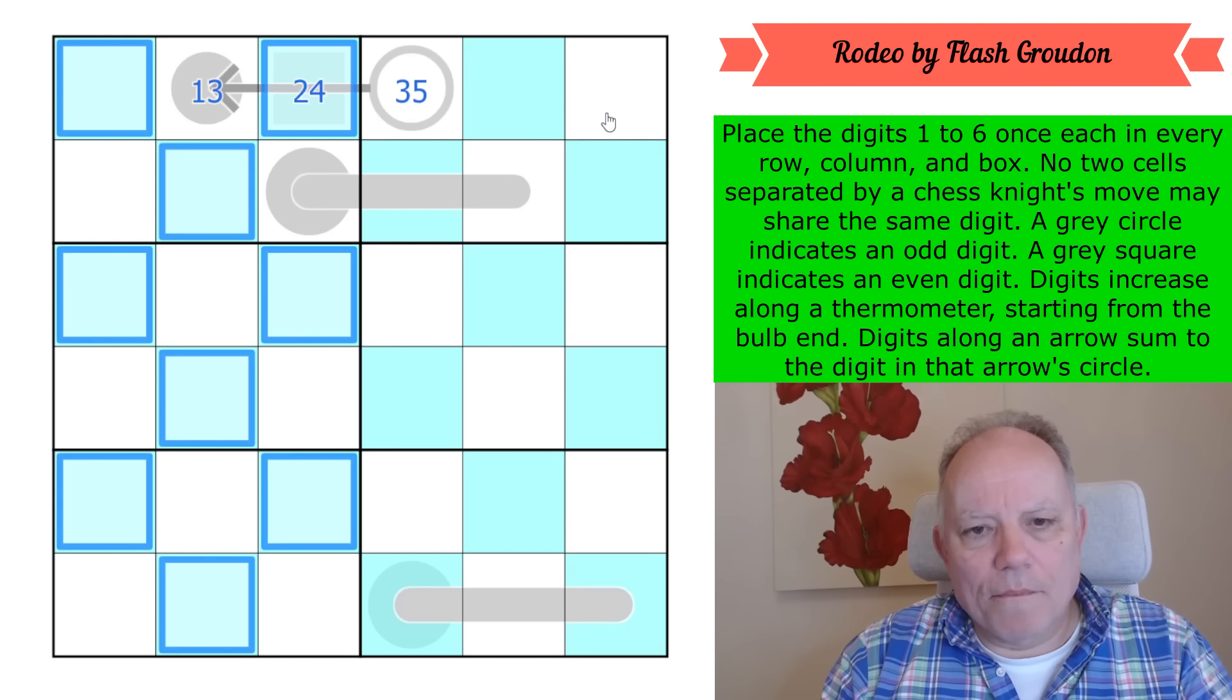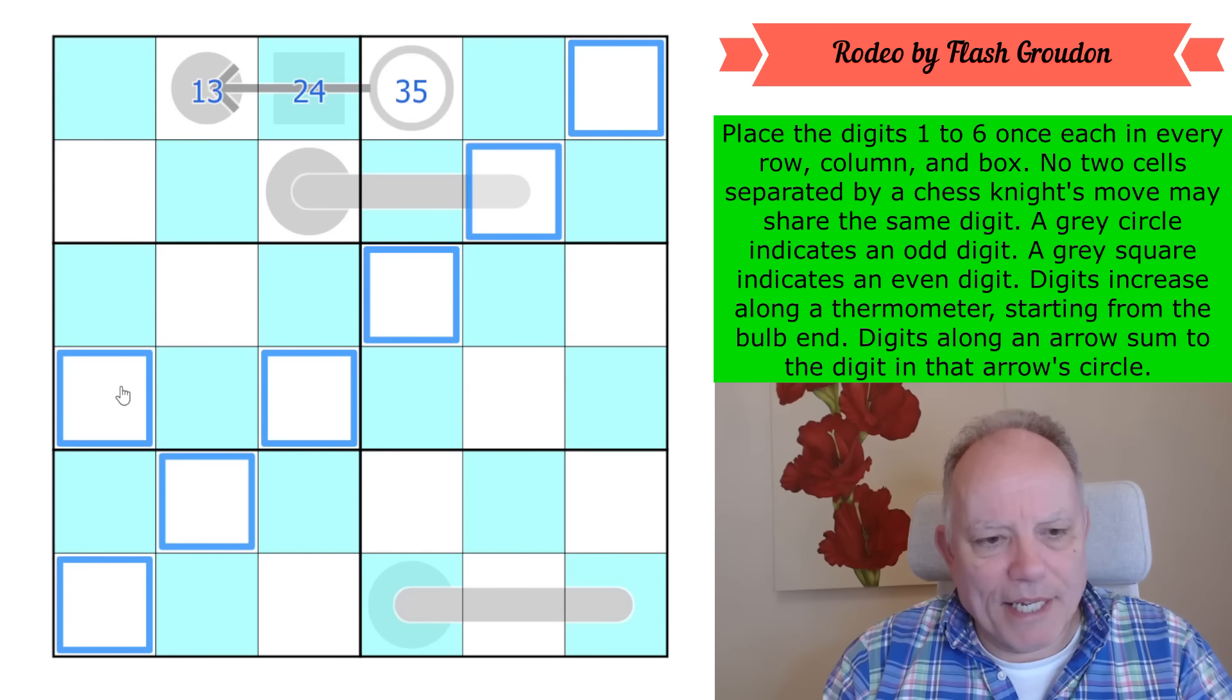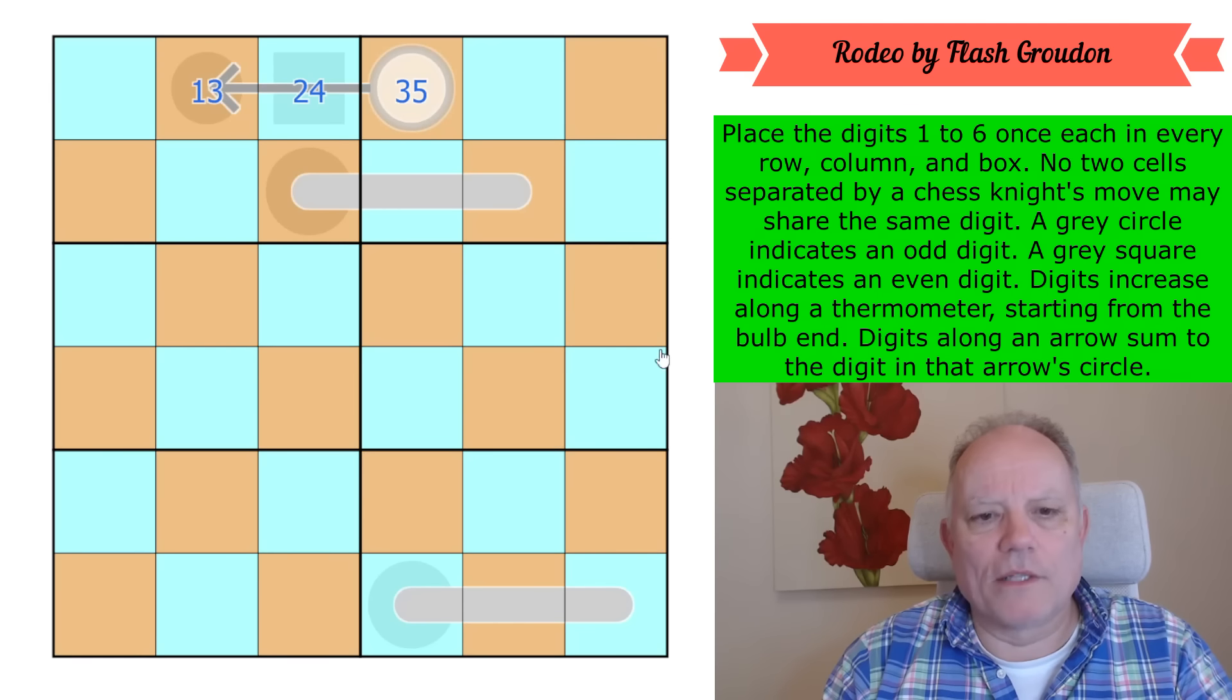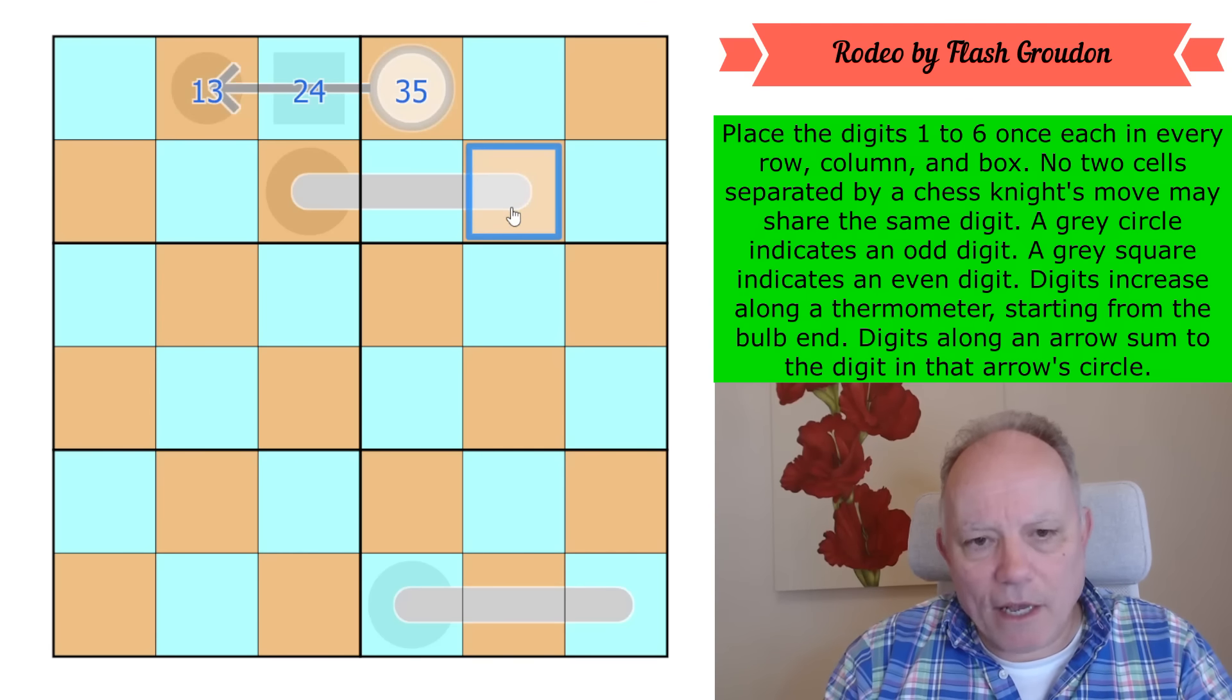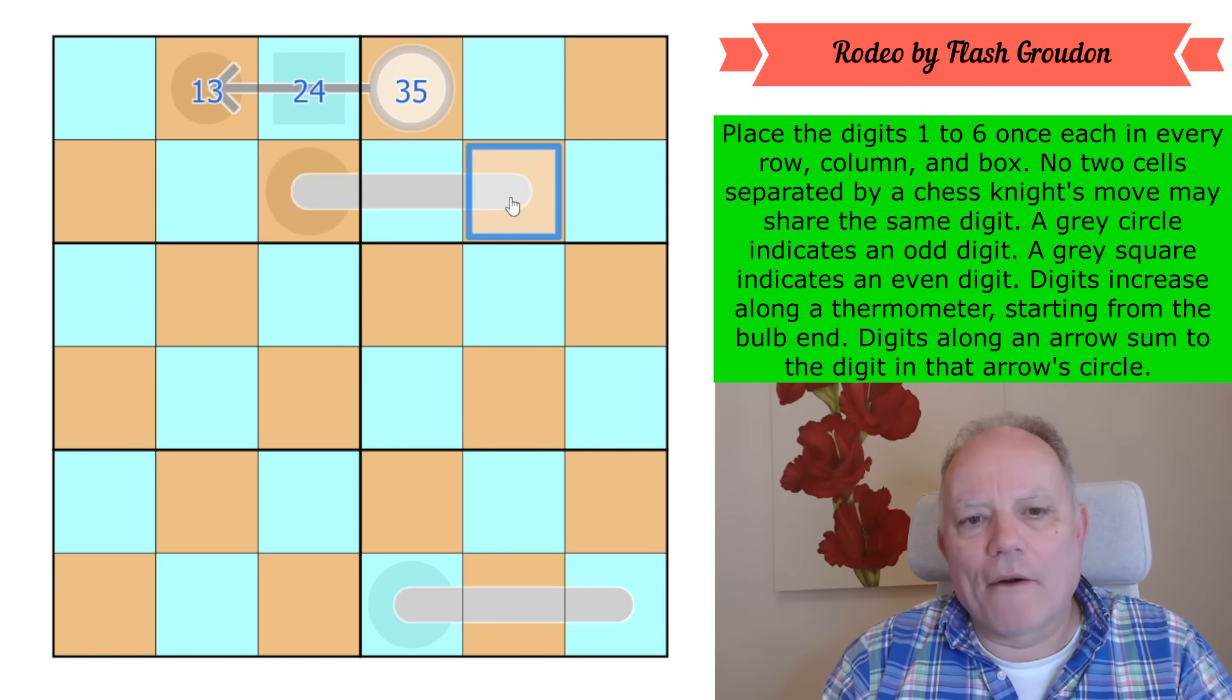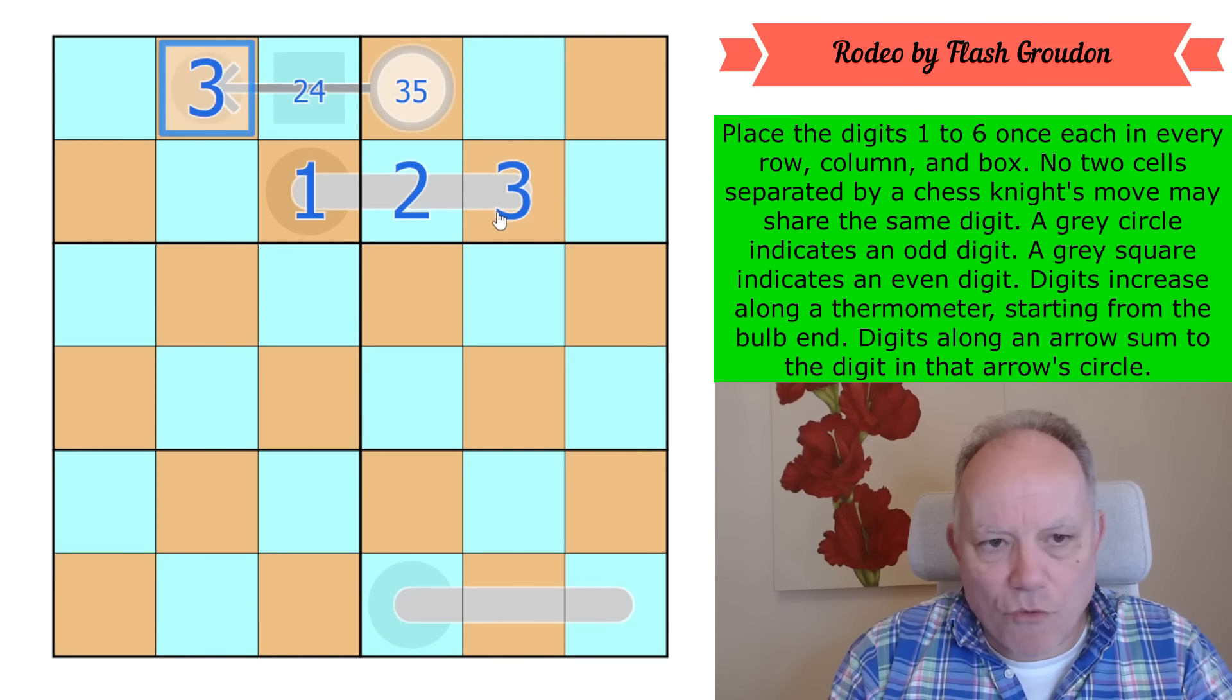Blue cells are one set of three digits repeating in all the boxes, and the orange cells are the other set. We know that one and three are in one group. Whatever this digit is, it goes there and it can't be a one now. That determines this whole arrow in a moment: three, two, one.